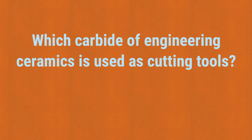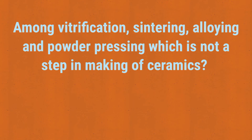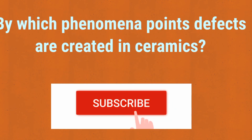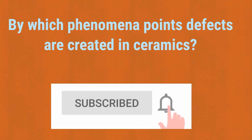Diamond is an example of which type of ceramics? It is abrasive. Which carbide of engineering ceramics is used as cutting tools? Tungsten carbide. Now this important question: among vitrification, sintering, alloying, and powder pressing, which is not a step in making ceramics? The answer is alloying.